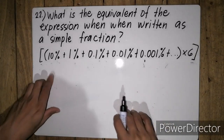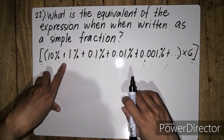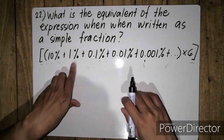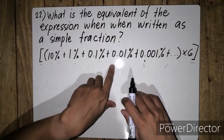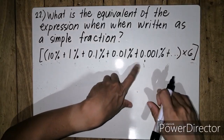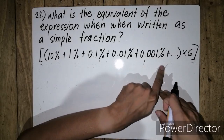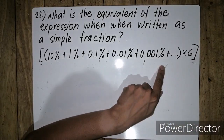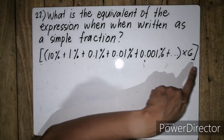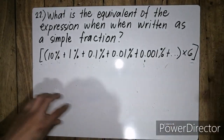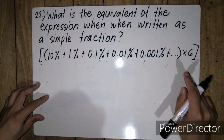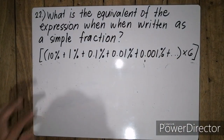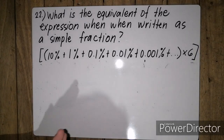Ang expression natin ay 10% plus 1% plus 0.1% plus 0.01% plus 0.001% plus infinite times 6. May tatlong elipses yun — that means yung number ay walang katapusan. So all we have to do is to add numbers na walang katapusan.